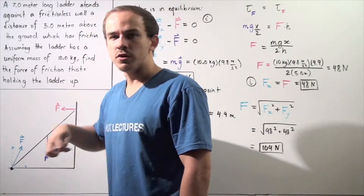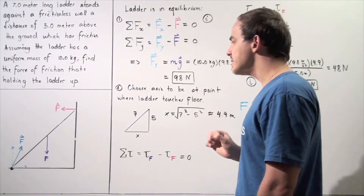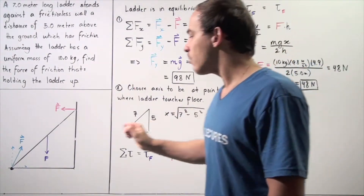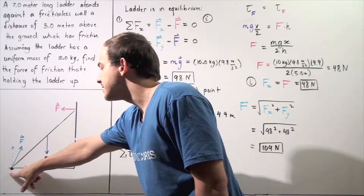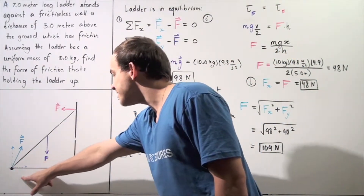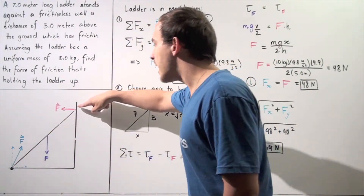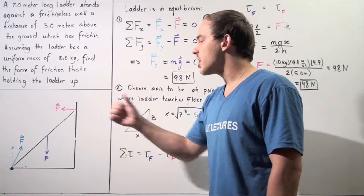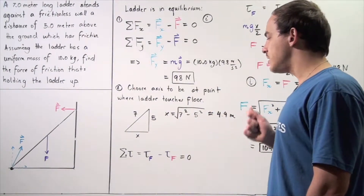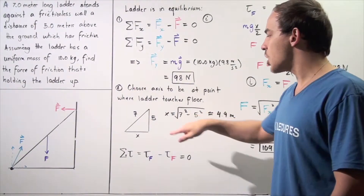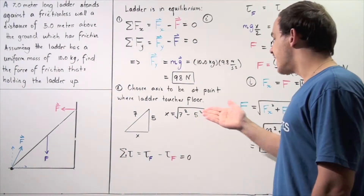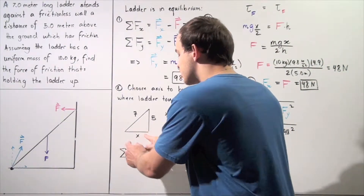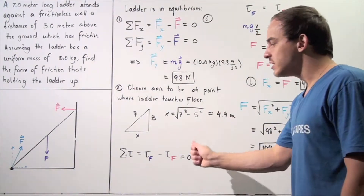Now let's find the x-component of the friction force. To do this we use torque, choosing the axis of rotation at the point where the ladder touches the ground. First, we need the base distance. Using the Pythagorean theorem with hypotenuse 7 m and height 5 m: x = √(49 − 25) = √24 ≈ 4.9 meters.